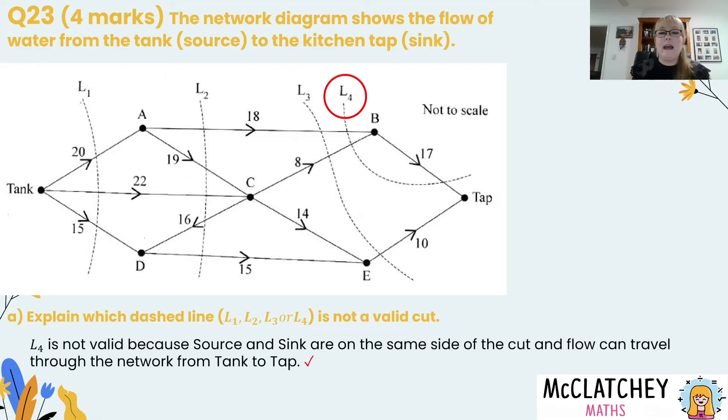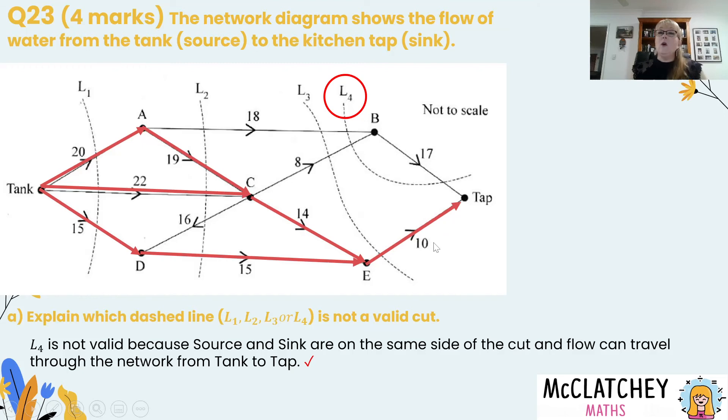Now L4 is not valid because if we look at this cut here we've got the tank and the tap on the same side of this cut. So we're actually going to have flow traveling through a number of places. You can see here that with L4 we're going to get all this flow coming through and it still gets through to the tap from all those pathways that are not cut. So that's why it's not valid. All you needed to do to earn the mark in this question was to say it's not valid because the source and the sink are on the same side of the cut and flow can travel through. So that's recognizing they're on the same side not on opposite sides is your mark achievement there.